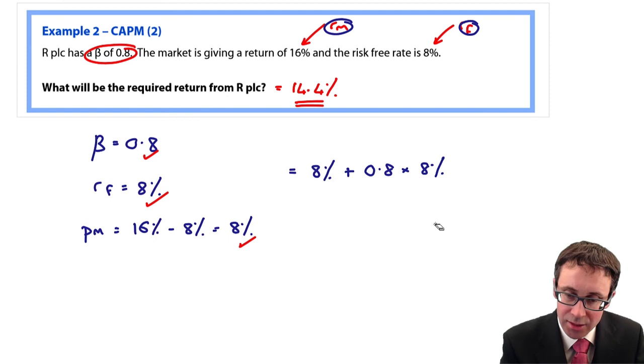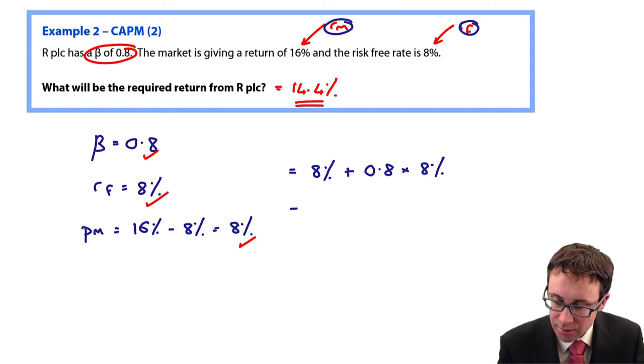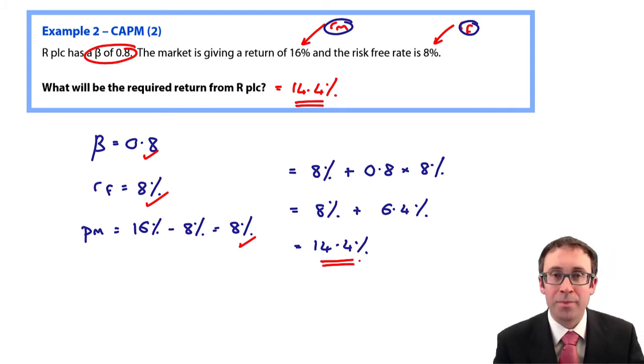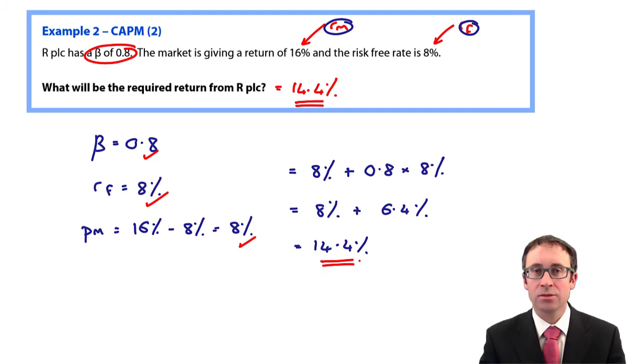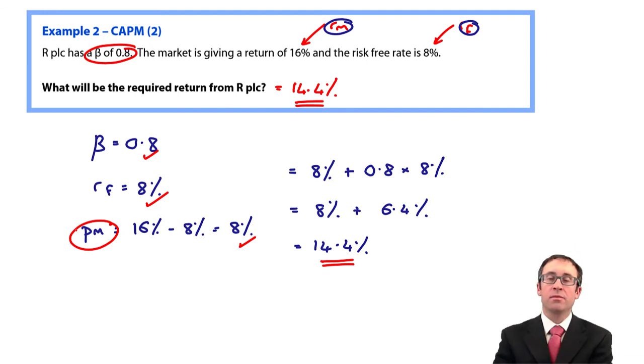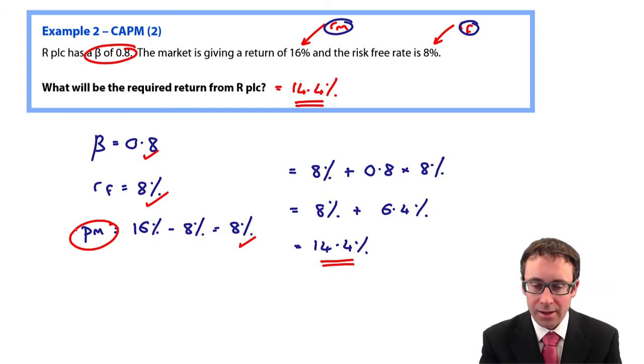You've got 8% plus 0.8 multiplied by 8%. And when you do that, that should give you 8% plus 6.4%, which is the same, 14.4%. So do just be very, very careful. You could, in an exam question, be given the risk premium as opposed to RM. If you read the premium there as RM, you might do RM minus RF being then what you think is the premium. 8 minus 8 is 0. That's just nonsense.